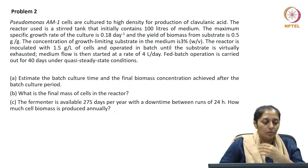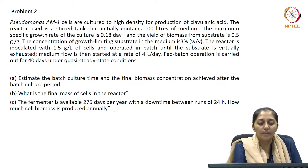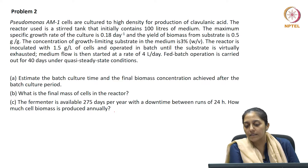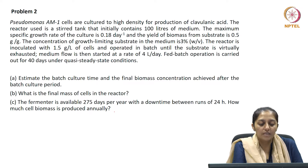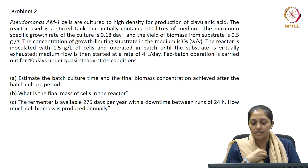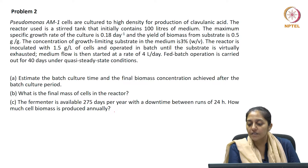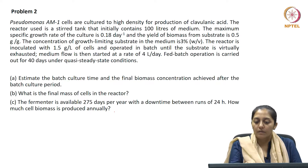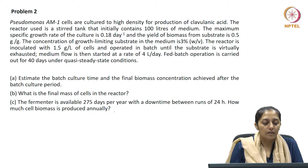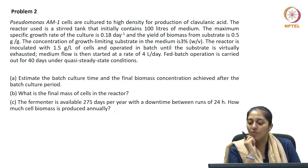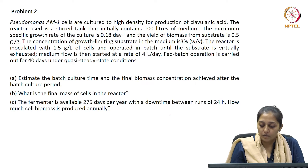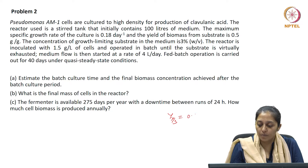Let us check out problem number 2. Pseudomonas AM1 cells are cultured to high density for production of clavulanic acid. The reactor used is a stirred tank that initially contains 100 litres of medium, so the initial volume V0 is 100 litres. The maximum specific growth rate of the culture is 0.18 day inverse and the yield of biomass from substrate, Yx/S, is 0.5 grams per gram.